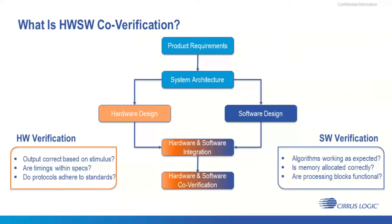Since we started talking about products and features, I want to quickly go through the product development cycle to show you where verification — and hardware/software verification in particular — fits in. We start with requirements from customers requesting features, which feeds into product requirements and system architecture. And then finally we reach the step where we start the hardware design, software design, and verification of all of them simultaneously.